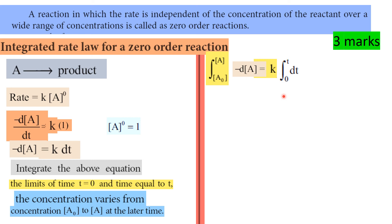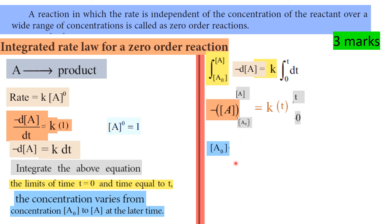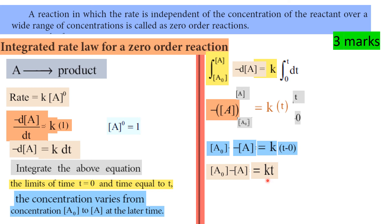Integrating both sides: minus A, with upper limit A and lower limit A0, equals k times (t minus 0). So A0 minus A equals kt. Rearranging, the rate constant k equals (A0 minus A) divided by t. This is the zero order reaction rate constant.